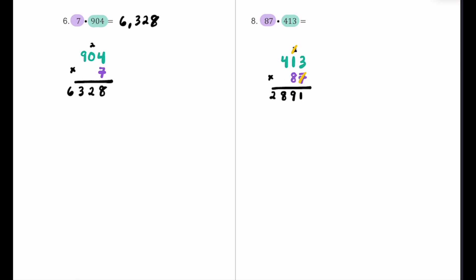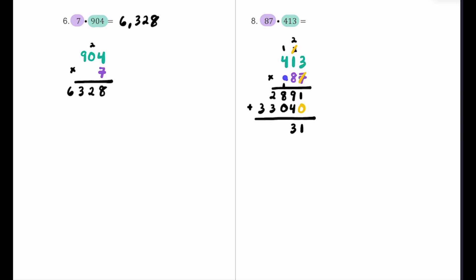Now let's talk about this 8, which is really 80 — so we put a placeholder underneath the 1. 8 times 3 is 24 — put the 4 and carry the 2. Then 8 times 1 is 8, add 2 to get 10 — put 0 in the hundreds place and carry 1. And 8 times 4 is 32 plus 1, that's 33 — put a 3 and another 3. Adding the partial products: 1 plus 0 is 1; 9 plus 4 is 13, put 3 carry 1; 1 plus 8 plus 0 is 9; 2 plus 3 is 5; and then we have 3 in the ten-thousands place. Our final product is 35,931.